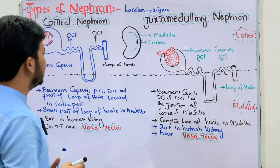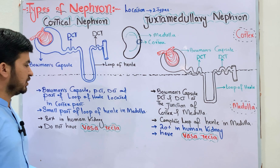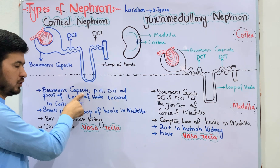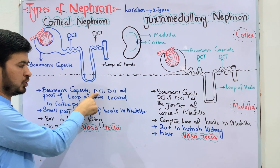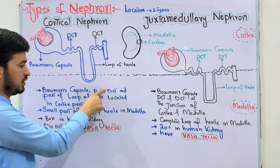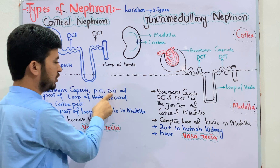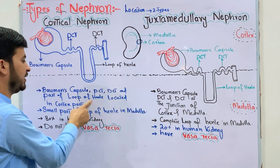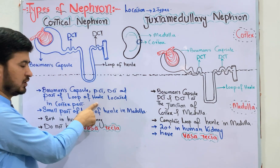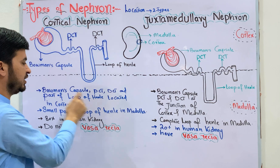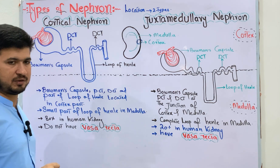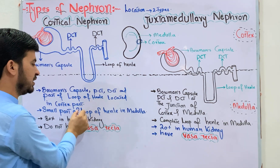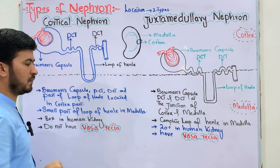In the cortical nephron, the Bowman's capsule, proximal convoluted tubule, and distal convoluted tubule are all located in the cortex region. Only a small part of the loop of Henle extends into the medulla region.